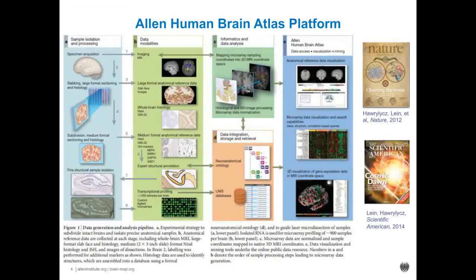There's also an interesting case study which looks at differential expression between brain regions. The Allen Human Brain Atlas is a multi-modal atlas which consists of several parts: an imaging MRI component, large format anatomical reference data, whole brain histology including Nissl, which was used to delineate the different regions of the brain for the microarray component. There's also medium format anatomical reference data, including in situ hybridization of certain areas of the brain of over a thousand genes.